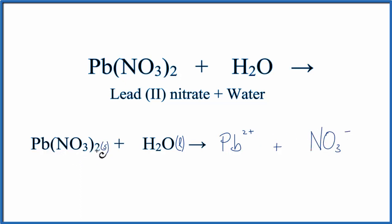But note we have this 2 here. That means we have 2 NO3 minus, 2 nitrate ions. So we do need to put a 2 in front of the NO3 minus, the nitrate there.